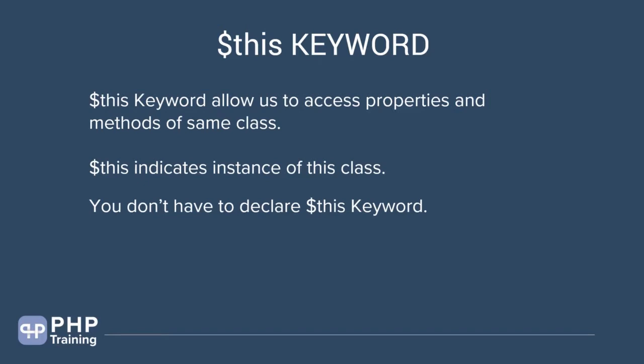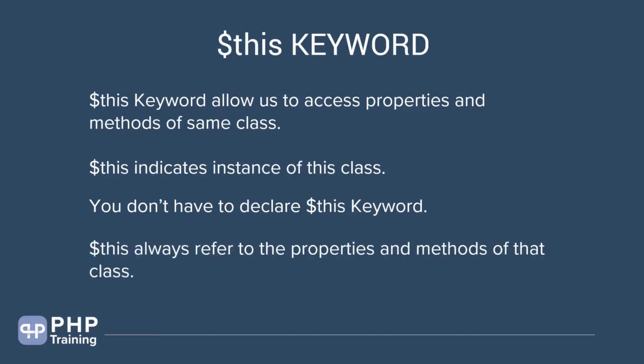You don't have to declare $this — it is automatically available in the class. $this refers to the instance of the class, which is nothing but an object. $this always refers to the properties and methods of this class. So if there is a property that a method wants to access inside the class, you access it via the $this keyword.